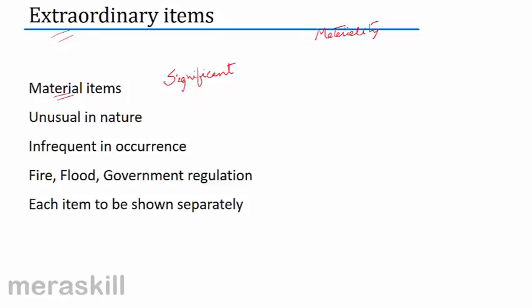We will discuss this in detail later. But here, extraordinary items are material items — that is, large, significant items, significant in value, unusual in nature, not a regular feature, and infrequent in occurrence. They do not happen month after month or year after year. If something unusual has happened and the value is really very negligible, it would not be called an extraordinary item.